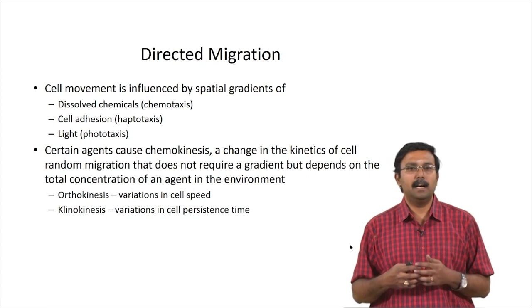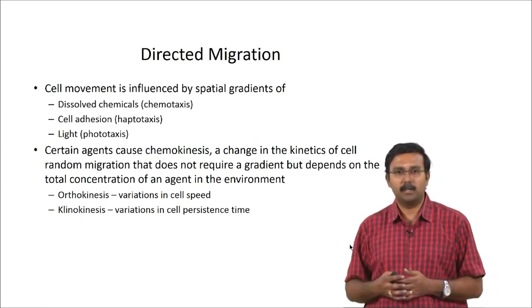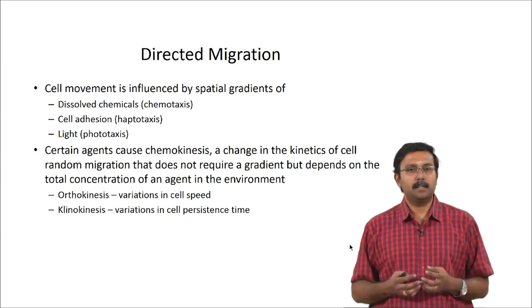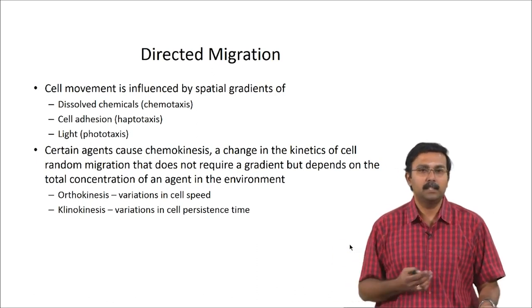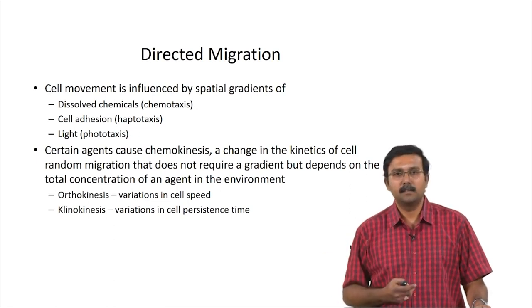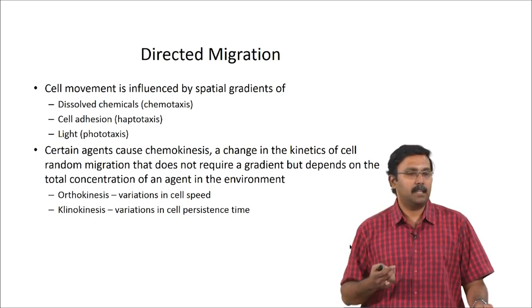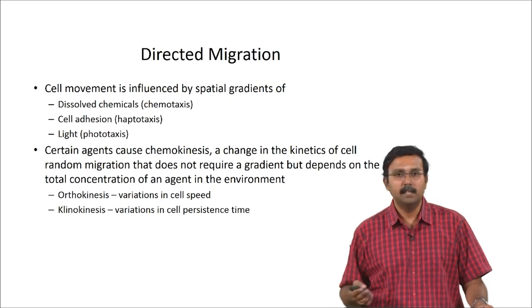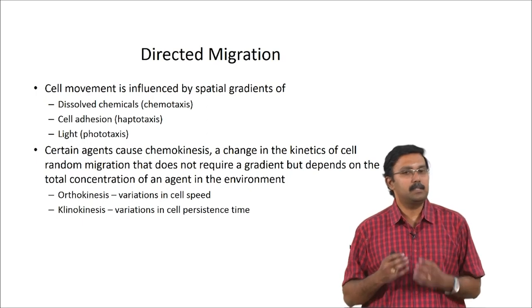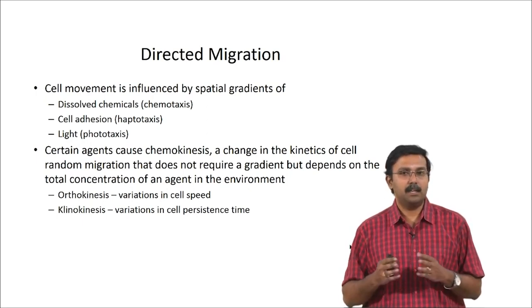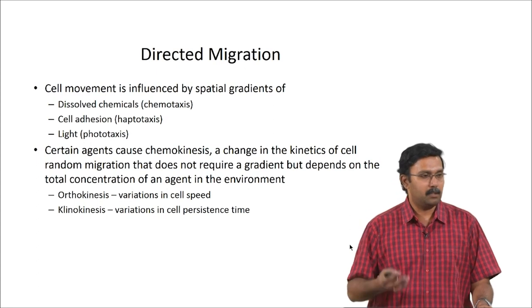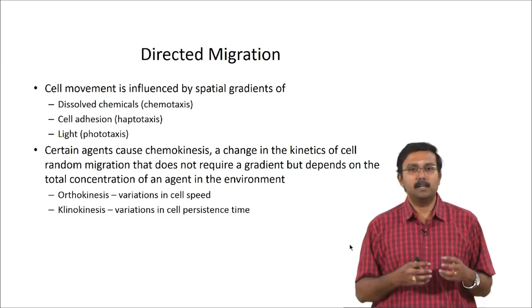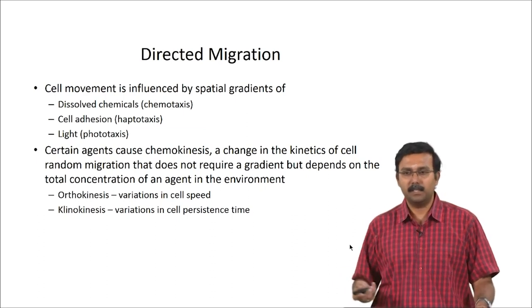Based on what stimuli is causing the migration, the process can be labeled as chemotaxis, haptotaxis, or phototaxis. Chemotaxis is when dissolved chemicals act as signaling molecules; cell adhesion would cause haptotaxis; and light could be the trigger for phototaxis. Certain agents can cause chemokinesis — a change in the kinetics of cells' random migration that does not require a gradient but depends on the total concentration of the agent itself. Orthokinesis refers to variations in cell speed, while clinokinesis refers to variations in cell persistence time.